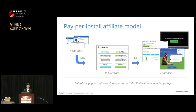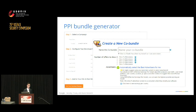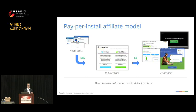What the PPI network gives to publishers is essentially a bundle generator. If you have a popular application, they provide an upload functionality — you submit an exe, maybe give a thank-you page, and they automatically rewrap it with advertisement offers. The publisher's control is actually fairly limited: you can select maybe one offer or maybe five offers, but what actually gets bundled is up to the PPI network and ad optimization. This leads to a very decentralized distribution environment that is somewhat ripe for abuse.